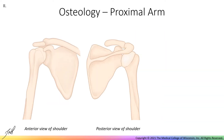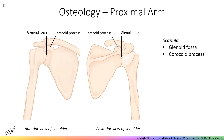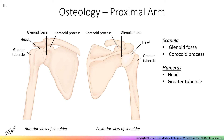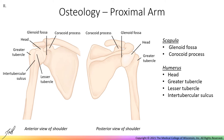Around the shoulder, we can observe several bony features relevant to other structures in the arm. On the scapula, I want to point out the glenoid fossa, which articulates with the humerus, and the coracoid process, which is the site of attachment for several muscles. On the humerus, we can see the head of the humerus, which articulates with the glenoid fossa of the scapula. We can also see the greater and lesser tubercles, which are bumps on the proximal lateral humerus. Between the tubercles is the intertubercular sulcus.